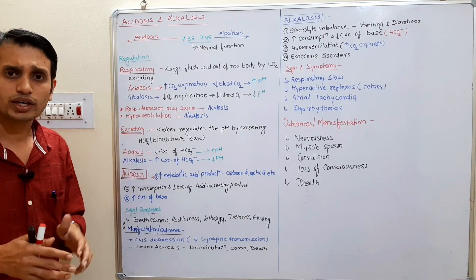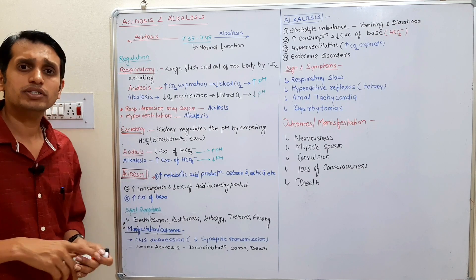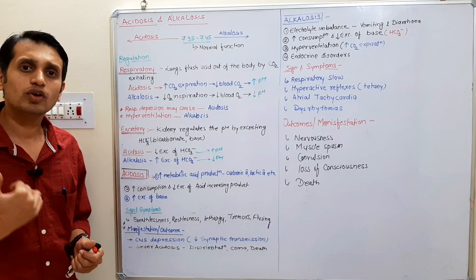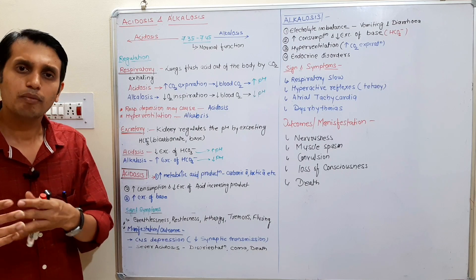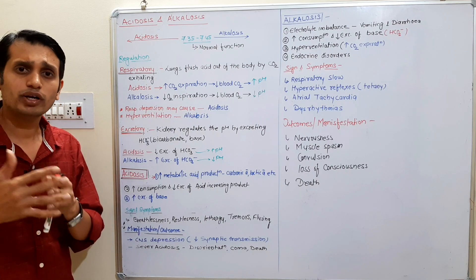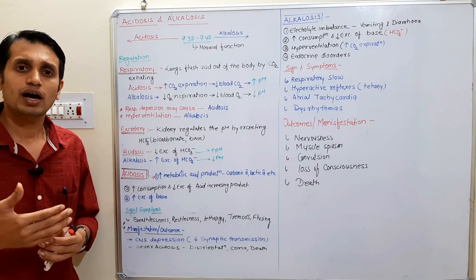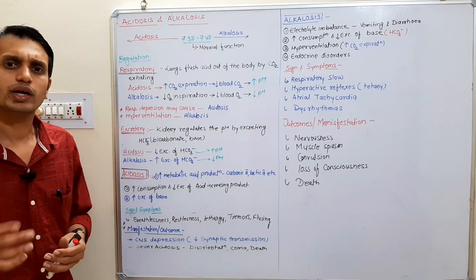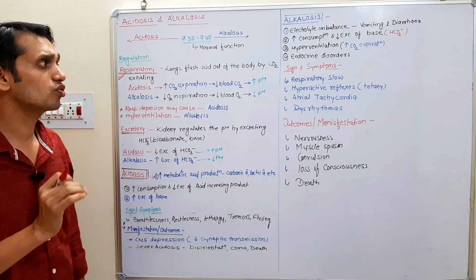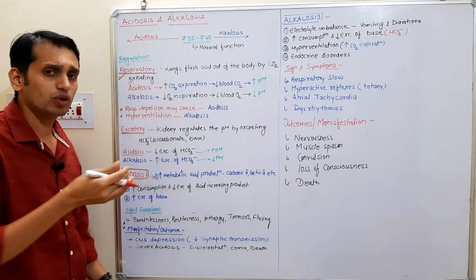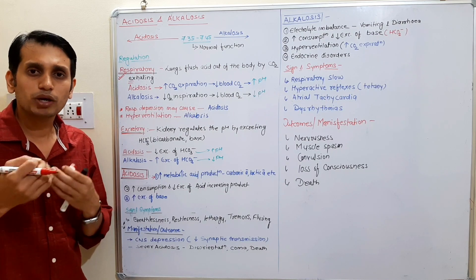There are two regulatory systems. The first is the respiratory system — your lungs regulate oxygen and carbon dioxide through inhalation and exhalation to maintain blood pH. If your blood has high carbon dioxide, the pH decreases. The first pathway is the respiratory pathway: lungs expel acid out of the body by exhaling CO2, which lowers acidity and raises pH.